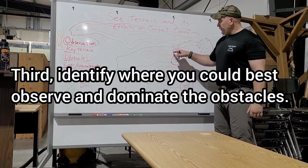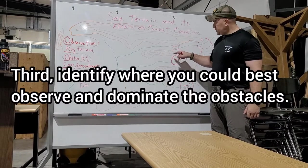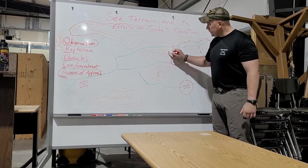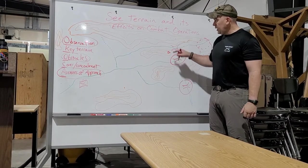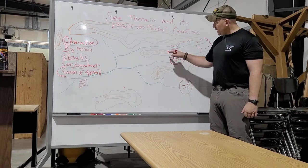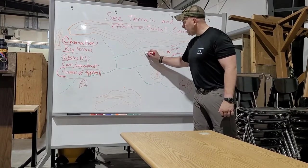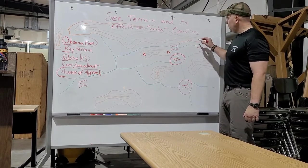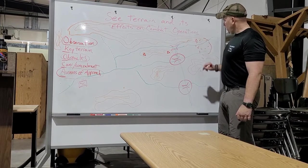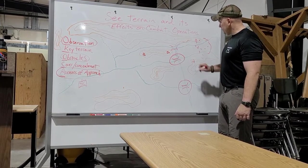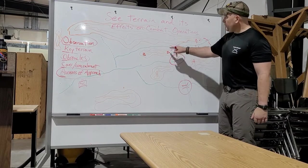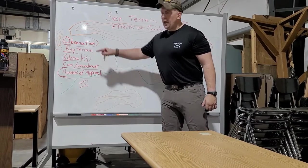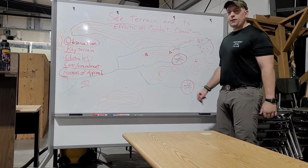Once you find the obstacles and choke points, look for what gives you observation over them. For example, if I want to provide observation to control these obstacles, this little hilltop on one side is probably a great spot — I can control here and here just from that one position. Another position could be about right here, where I can see this choke point. I would put somebody right here and maybe someone right here. You can quickly identify the avenues of approach, where the obstacles are, and where the observation overwatches those points.